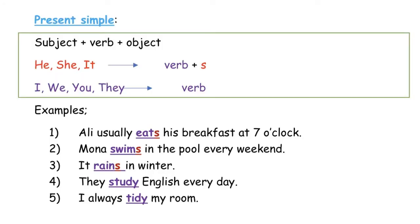Present simple consists of subject plus verb plus object. He, she, it — verb with S. I, we, you, they — verb without S. Let's see some examples.